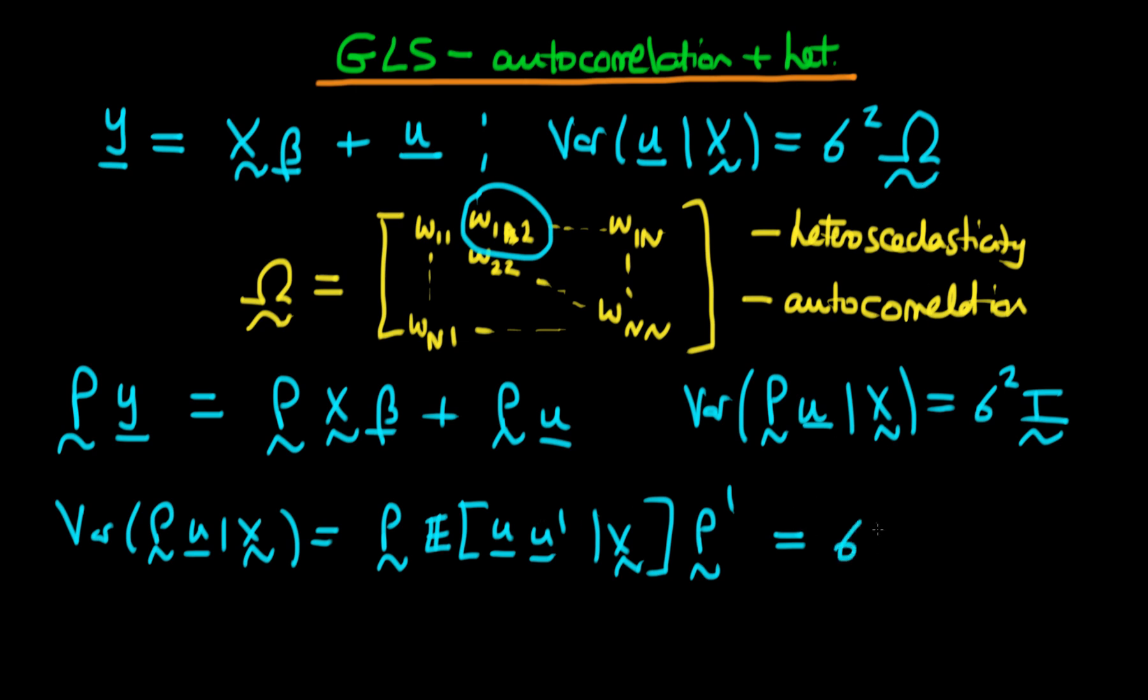So we can rewrite this as sigma squared times P times omega, where omega isn't necessarily diagonal, times P prime. And what we want is this to be equal to sigma squared times I, so we want to choose our transformation matrix P such that this is the case.